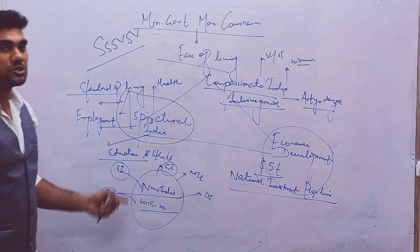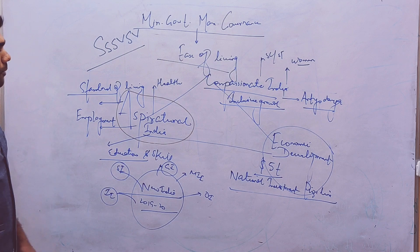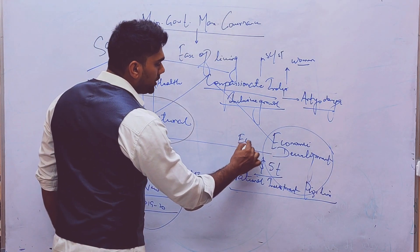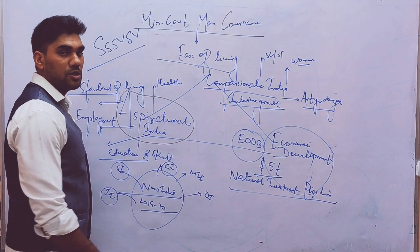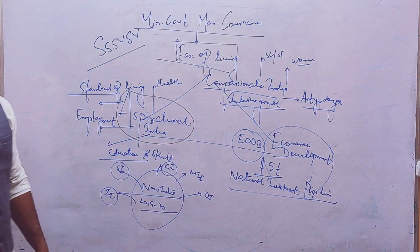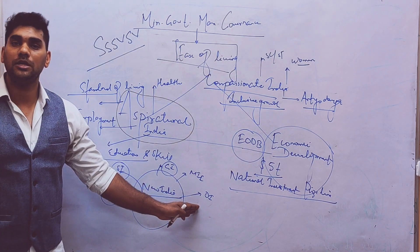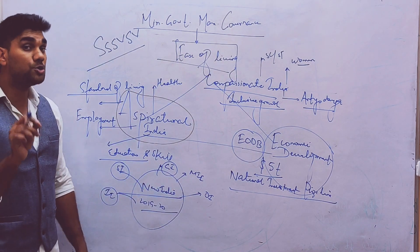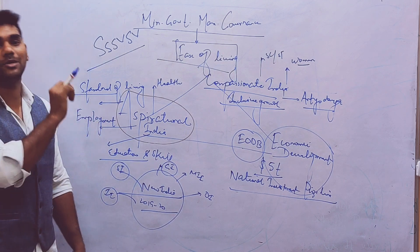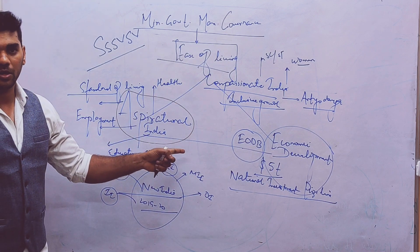So this has been the philosophy of the current government. This talks about the ease of living and the government says that here for the economic development we need to promote ease of doing business so that ultimately the objective of ease of living can be achieved. So this was the introductory video in order to introduce you about the philosophy and how to apply the philosophy in answer writing. Particularly in answer writing we can apply the same thing.